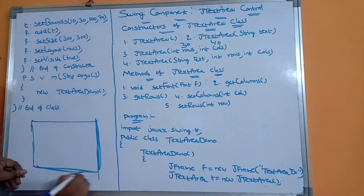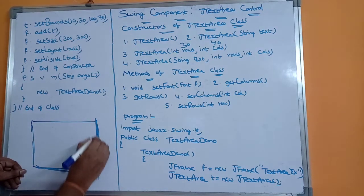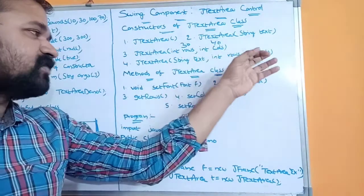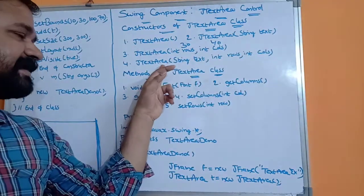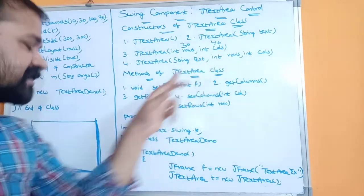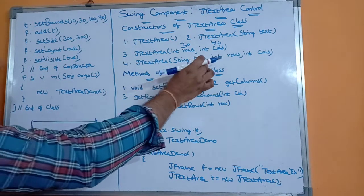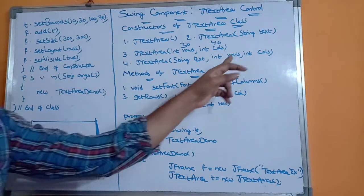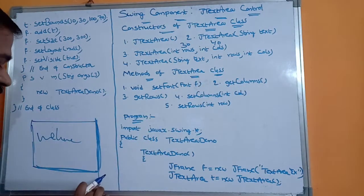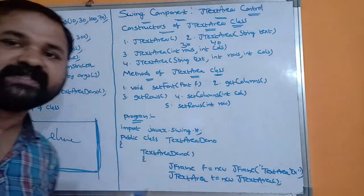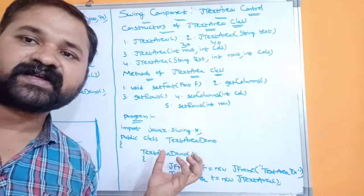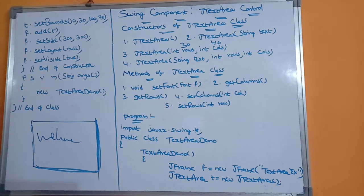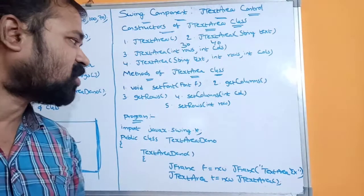If the fourth constructor is used, the text area will be displayed with the specified default text and with the specified number of rows and columns. Now let's see about the methods of the JTextArea class — mainly we have five methods.